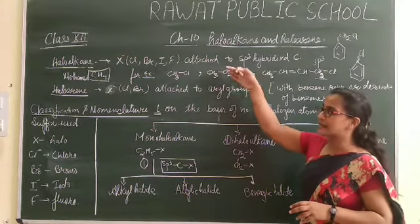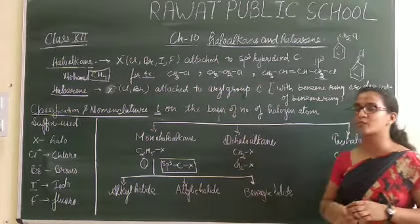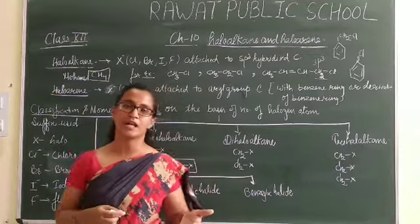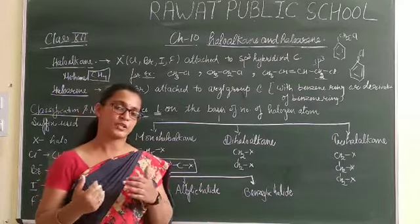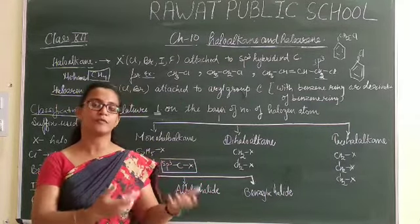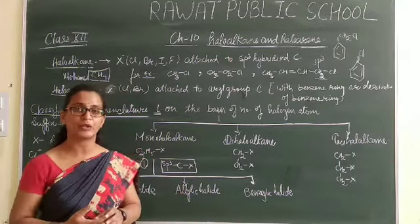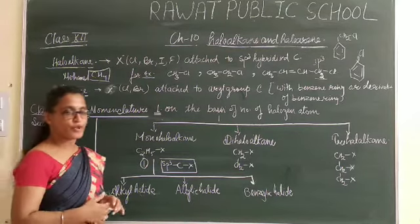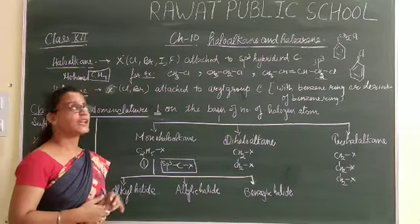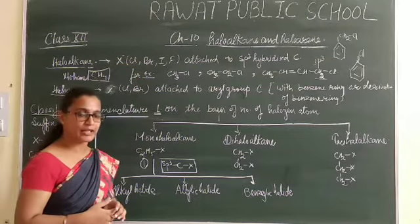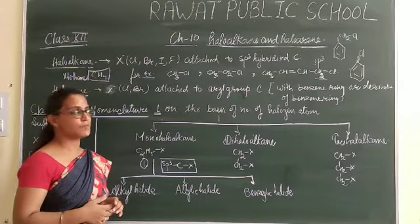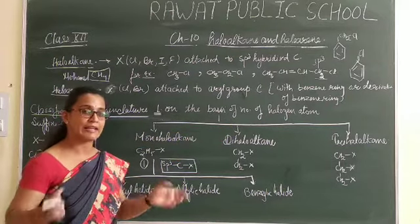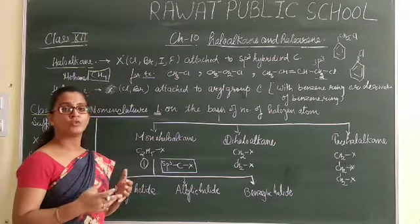So there are two basic kinds — Haloalkanes and Haloarenes — and one by one we have learned their general structure and classification. Then we should learn about their physical and chemical properties and what type of reactions they undergo. Now next is classification. First classification of Haloalkanes: the first classification is based on the number of halogen atoms — how many halogen atoms are present in the carbon chain.